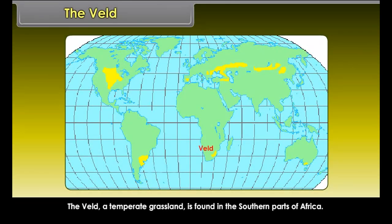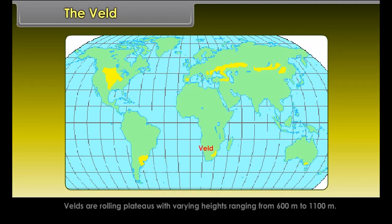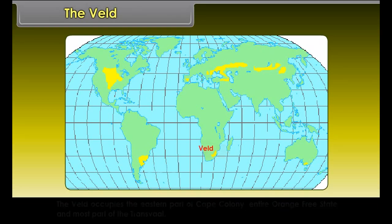Features of towns in Prairies: Major towns of the Prairies are connected with big railway junctions. These towns serve as the centers for collecting and storing agricultural produce.